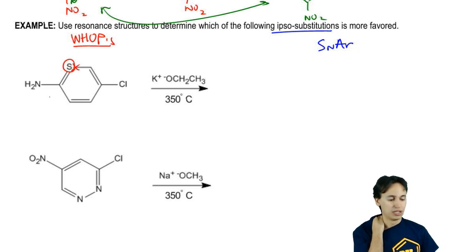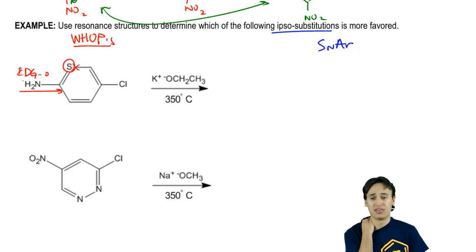Then I've got a donating group on the ortho. I have heteroatom on meta, donating group on ortho, EDG on ortho. Does that help me? No, that's terrible. This one isn't very favored.